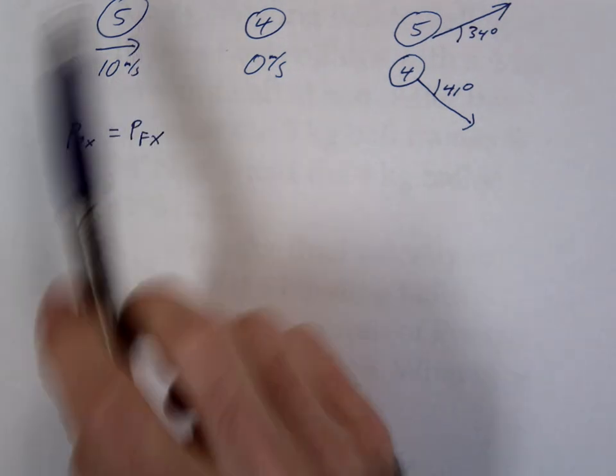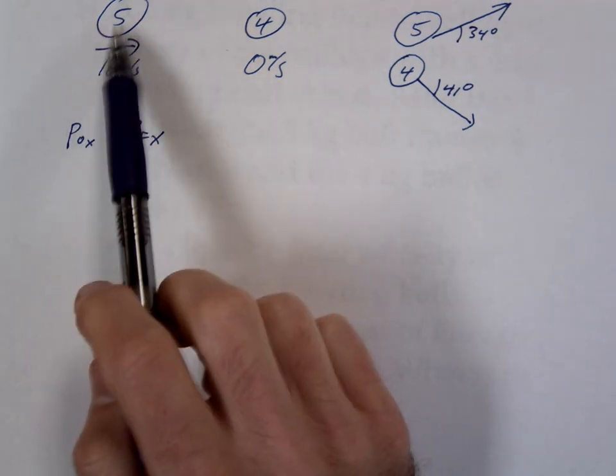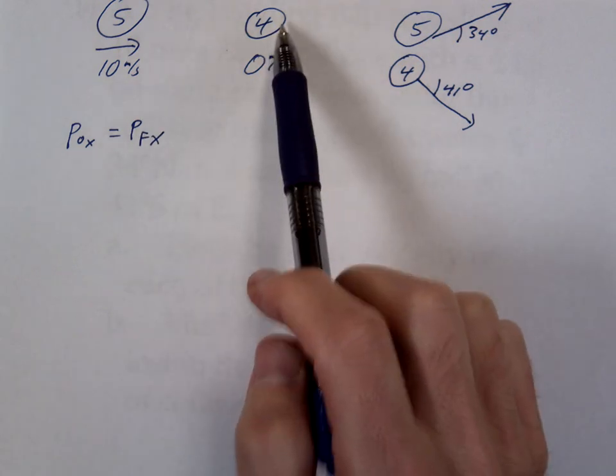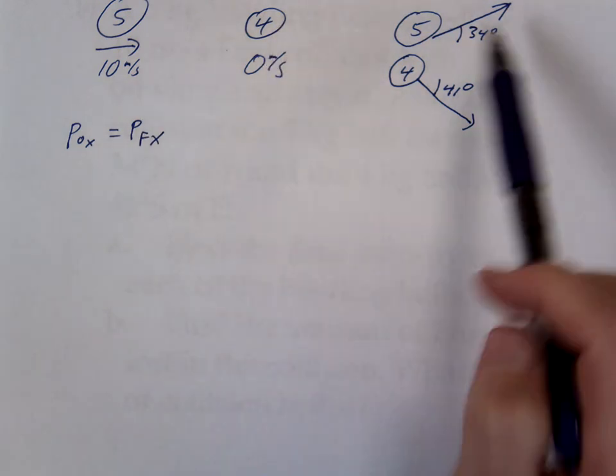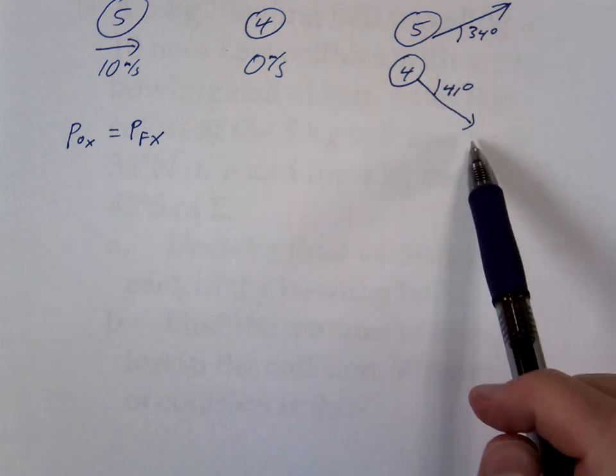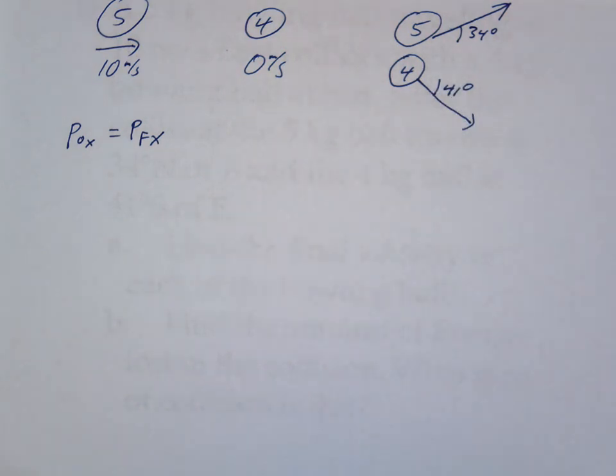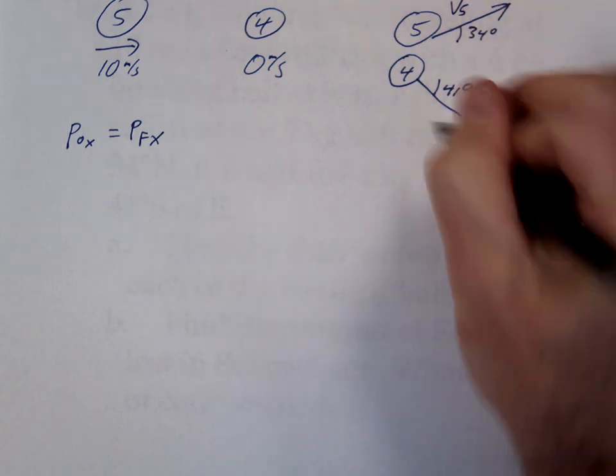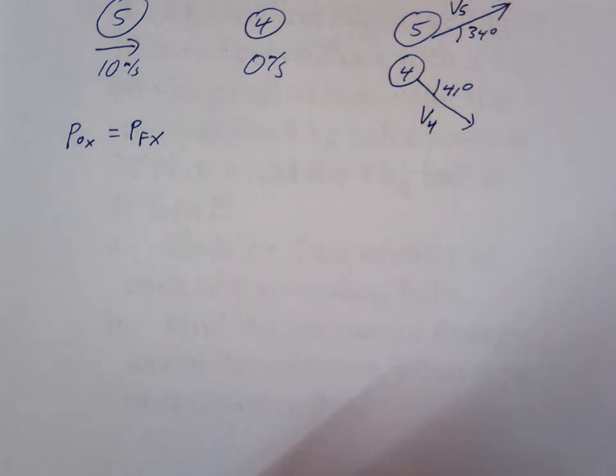Okay, so here's the problem. We have our one ball, 5 kilograms, moving at 10 meters per second. It's going to collide with the second ball of 4 at rest. After the collision, they're both going to go off at angles. We're looking for the final velocity of each. So we'll call that V5. We'll call this V4.